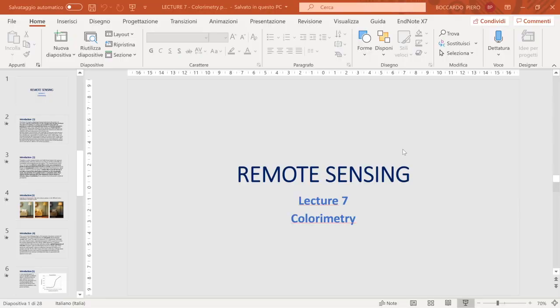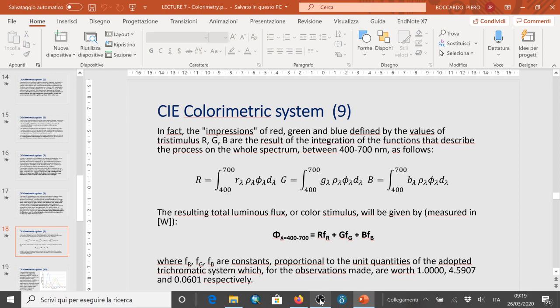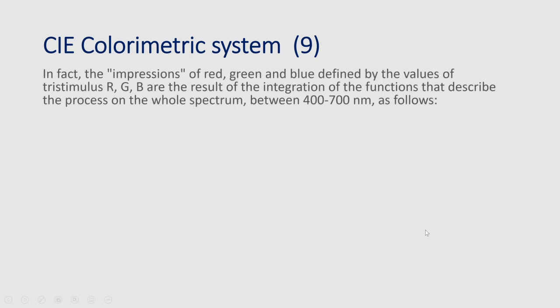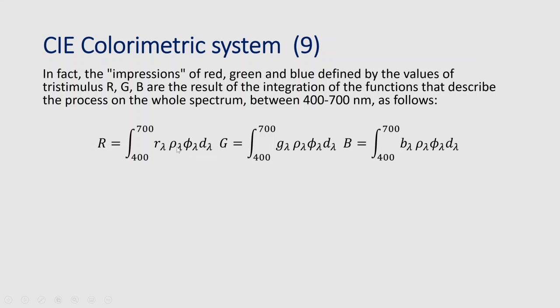The three integrals calculate the total radiant energy going to our cones. It is quite complex to think about the tristimulus together with the rho-lambda and phi-lambda as mentioned before, and the meaning is what was described above.